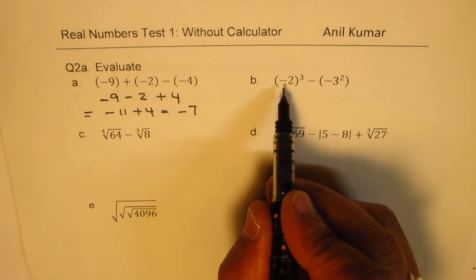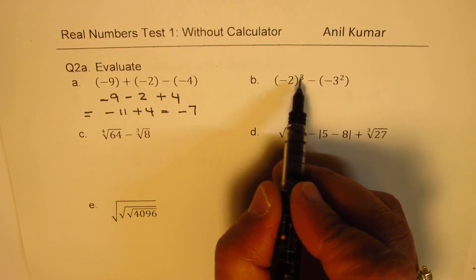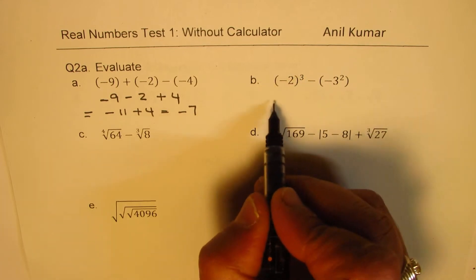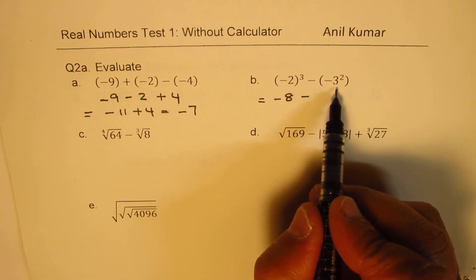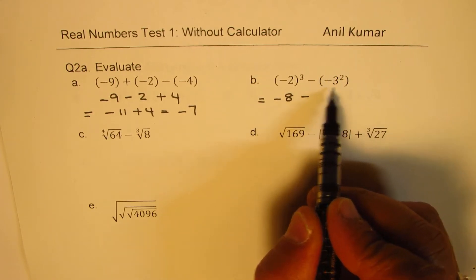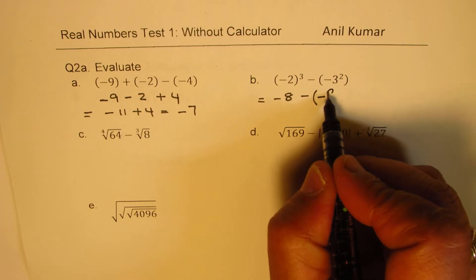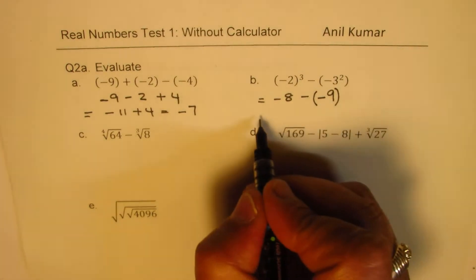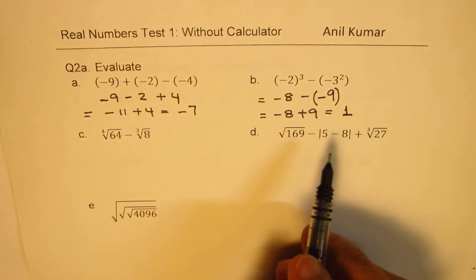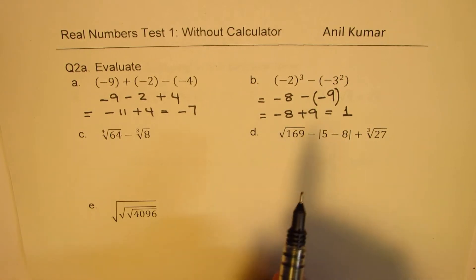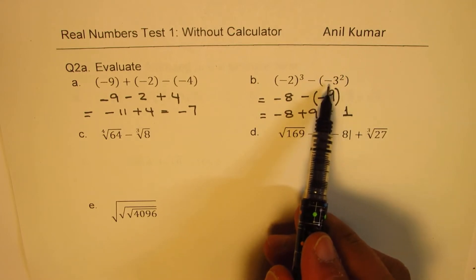In part B, we have negative 2 cubed minus negative 3 squared. The cube of a negative number is negative, so negative 2 cubed is minus 8. For negative 3 squared, the negative sign is outside the bracket, so only 3 is squared, giving minus 9. Opening the bracket gives minus 8 plus 9, and the answer is plus 1. This is an important catch: the exponent 2 applies only to 3, not to the negative sign.